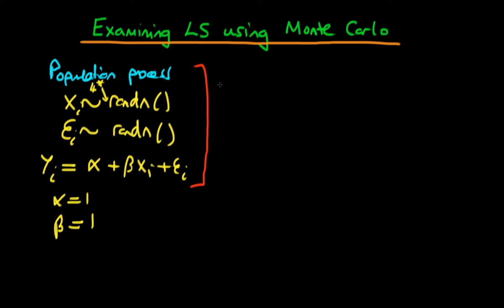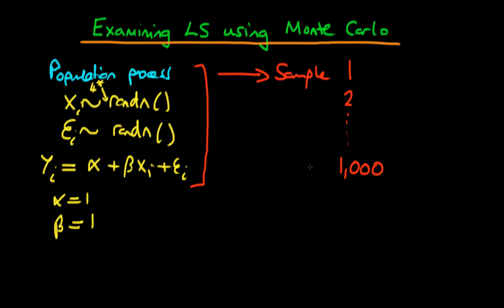Then we're going to use these population processes to generate samples. We're going to generate a first sample, a second sample, and a number of samples — perhaps a thousand different samples, each of a size of a hundred individuals.